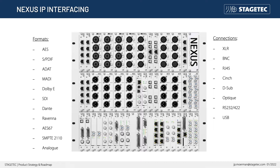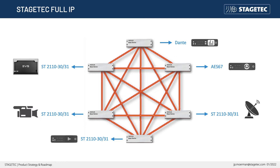For quite some time now there are Nexus interfaces in all audio over IP formats: Dante, Ravenna, AES67, and ST2110. However, the topic of this clip is how to switch the Nexus internode connectivity from TDM fiber to actual IP.